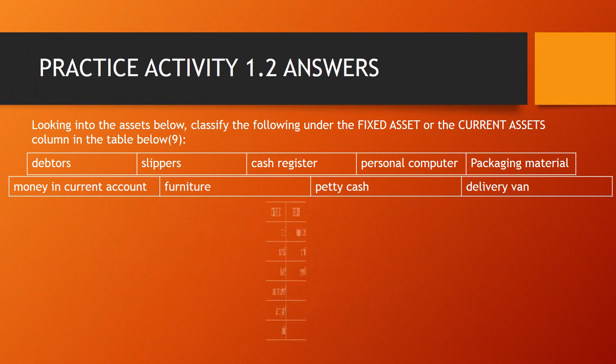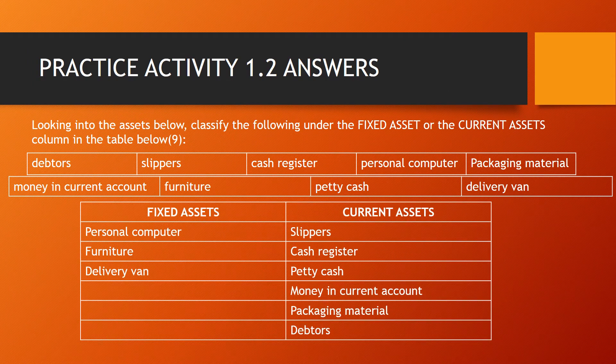Next up we had Practice Activity 1.2 — you needed to put the assets given under the correct column. Under fixed assets we have personal computer, furniture, and delivery van. Under current assets we have slippers, cash register, petty cash, money in current account, packaging material, and data. This is out of 9 marks.